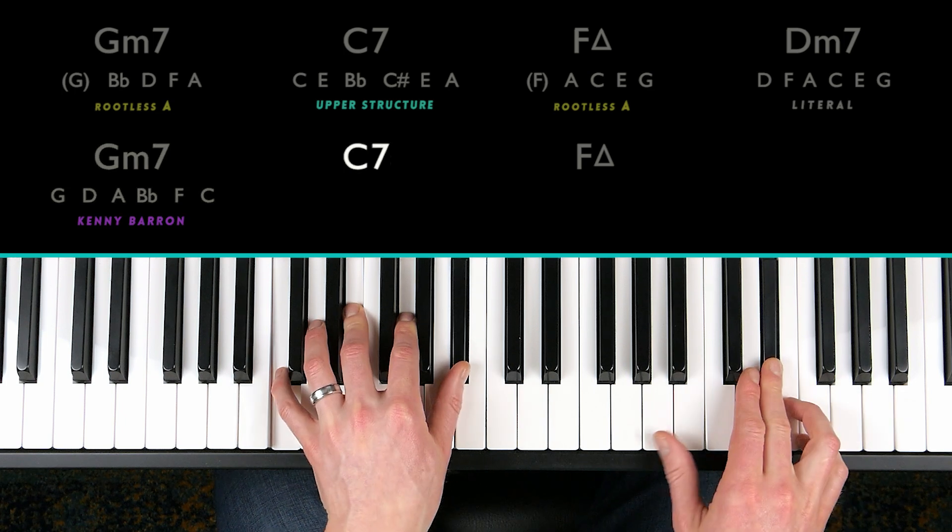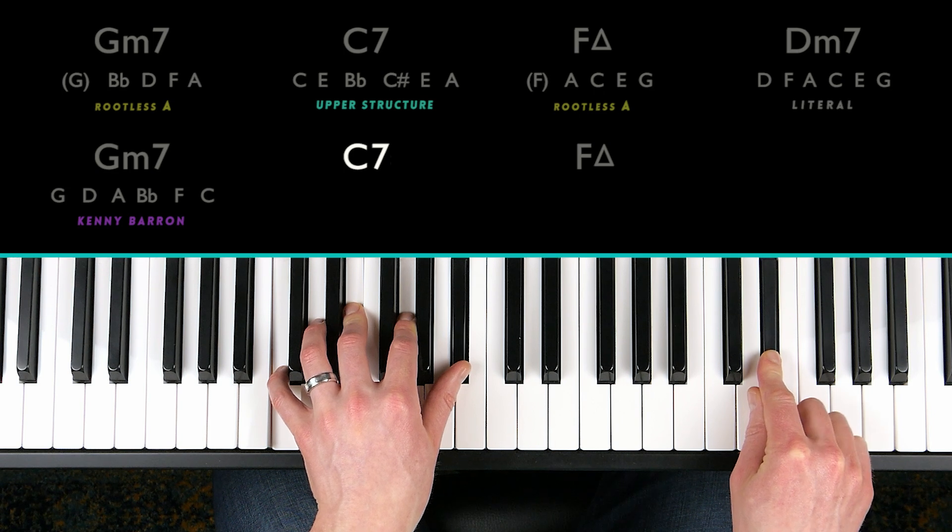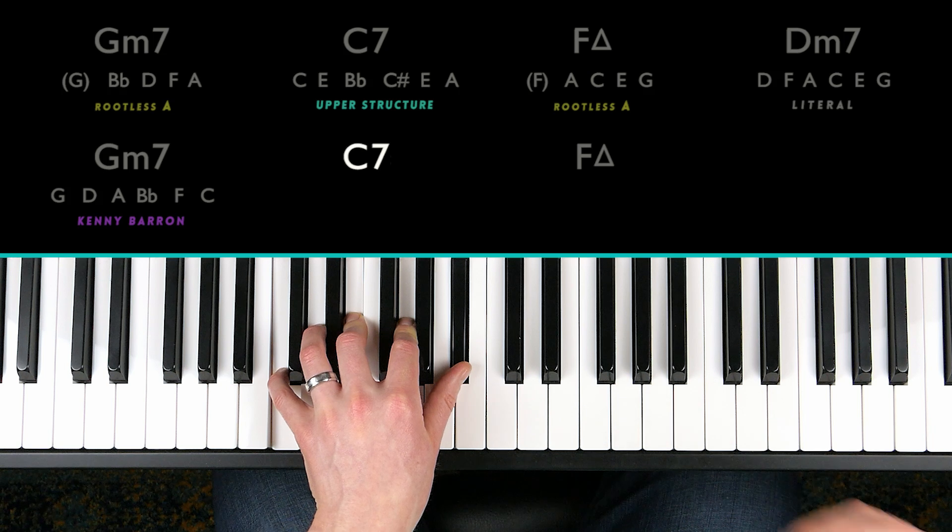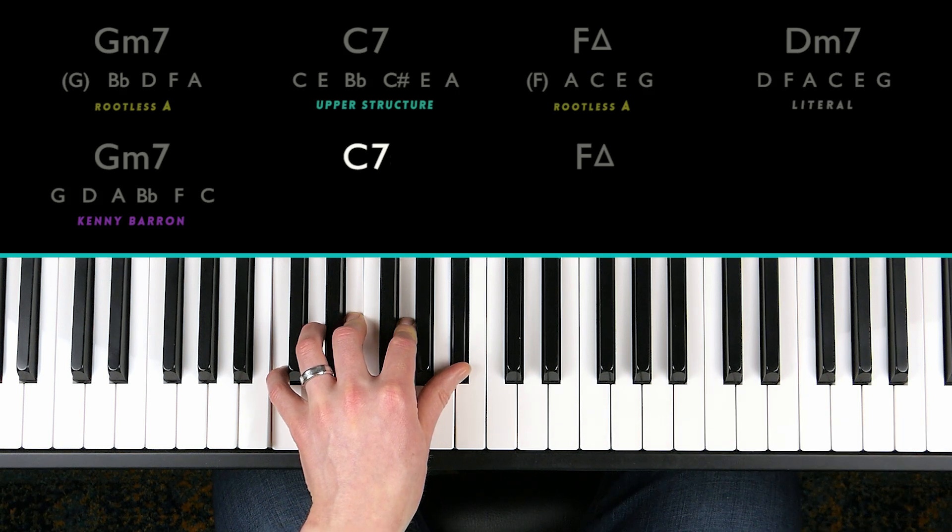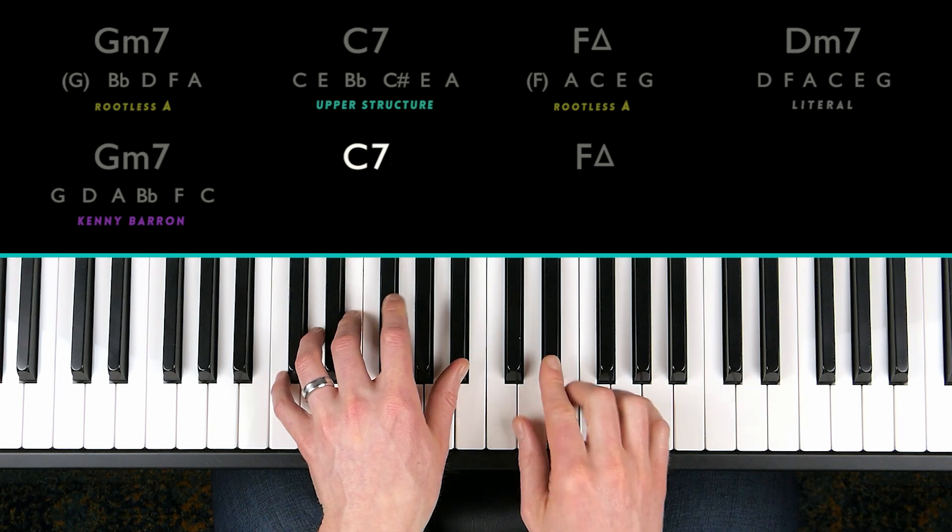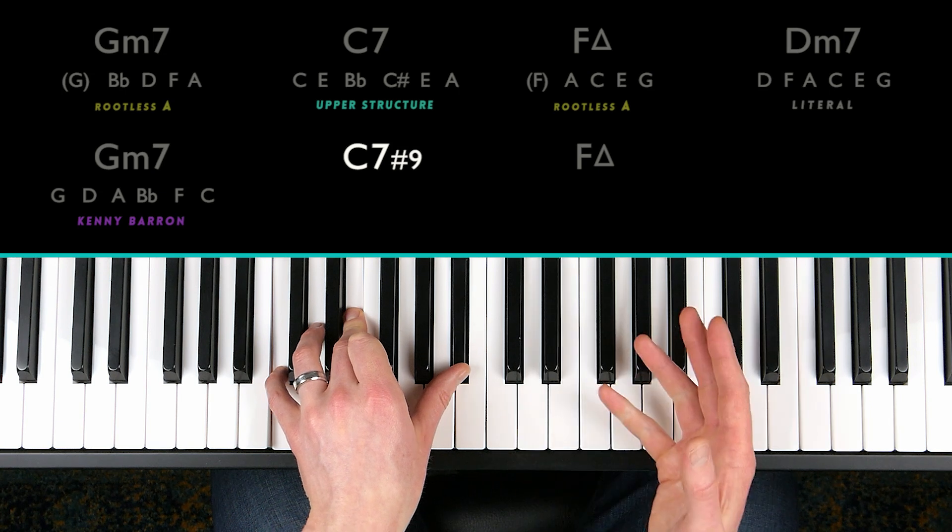And nearly done with the A section here. C dominant seven. And we have E flat in the melody note. Which scale degree is E flat? Well, you might have said it's the minor third, which is correct. But to be correct with the chord type, which is a dominant seven chord, we're going to call it a sharp nine. Because this chord has a major third already. So this is a dominant seven chord.